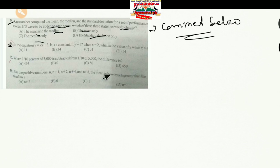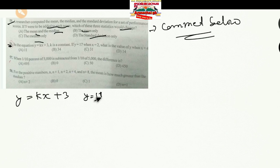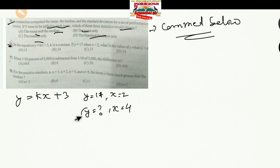Question 56: Y = KX + 3, where K is a constant. Given Y = 17 when X = 2, what is the value of Y when X = 4? We first need to find the value of K.